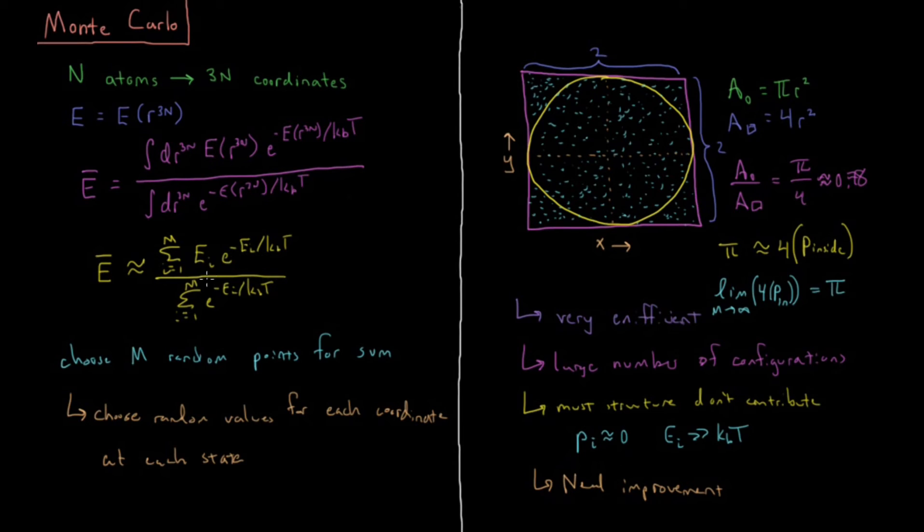Similarly for molecular properties, if we did an infinite number of structures randomly chosen, we would get the exact energy, but with some finite value which is large enough, our energy will be pretty good. But this is hard for molecular systems in general since most structures don't contribute, so we need a clever way to avoid structures which don't contribute hardly at all.